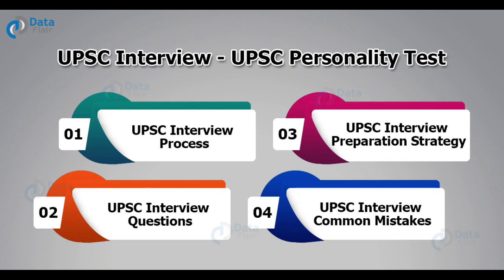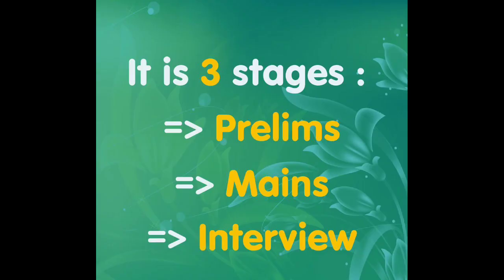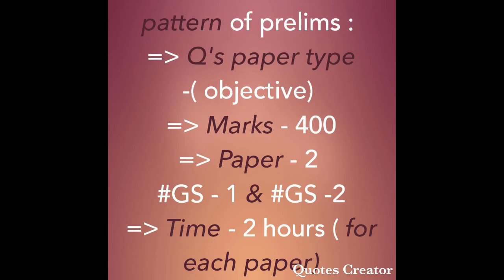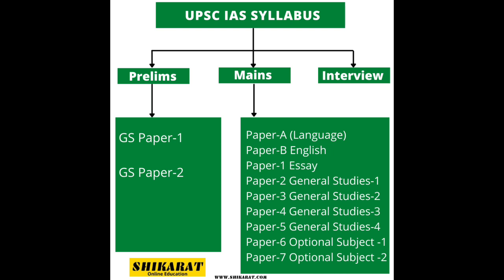Now let's come to the marks. The Preliminary Examination consists of multiple choice, objective-type questions and is conducted for 400 marks. There are 2 papers: GS1 consists of 100 questions, and GS2 consists of 80 questions as it is the CSAT paper. Cut-off marks are based on general category out of 200 — for example, General is 98, OBC is 96.6, etc. Only visually impaired aspirants will get an additional 20 marks.